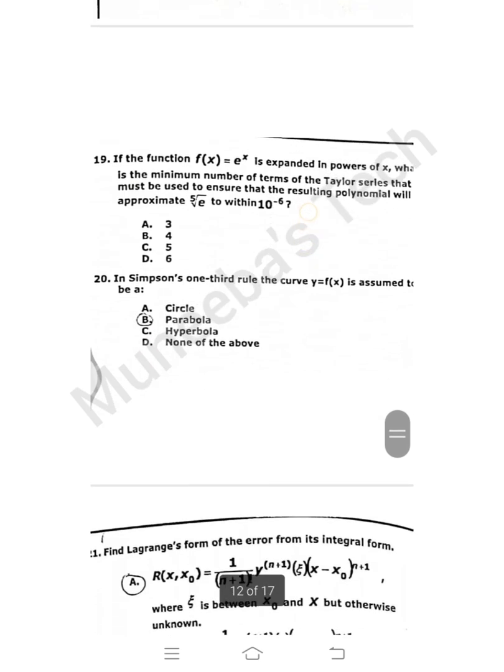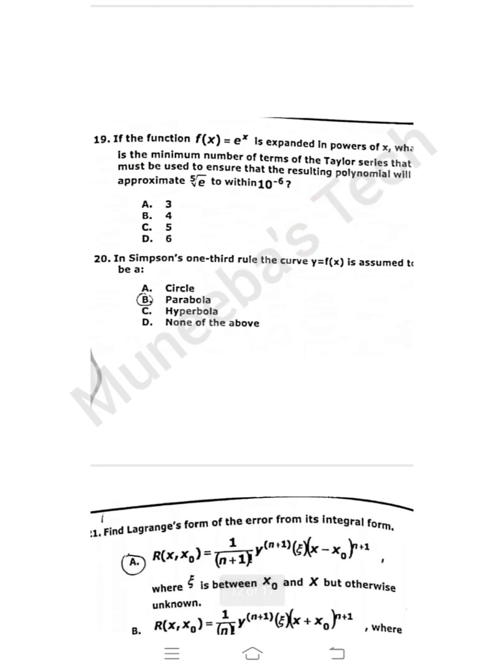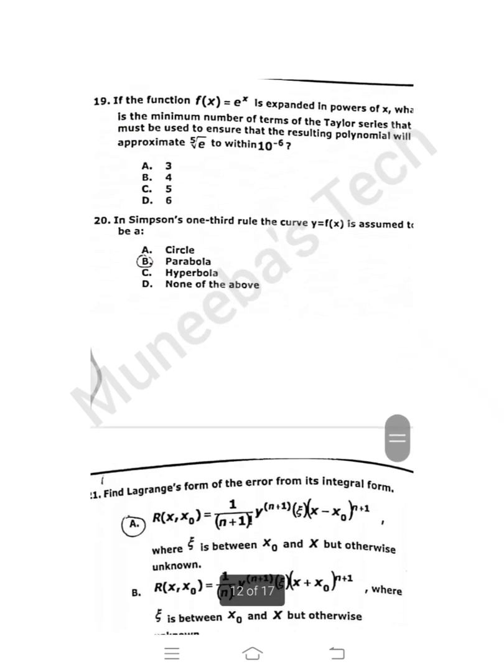Question 19: If the function f(x) = e^x is expanded in powers of x, what is the minimum number of terms of the Taylor series that must be used to ensure that the resulting polynomial will approximate e^(1/5) to within 10^(-6)? I'm not sure but I can say it may have answer C. Question 20: In Simpson's one-third rule, the curve y = f(x) is assumed to be a parabola.